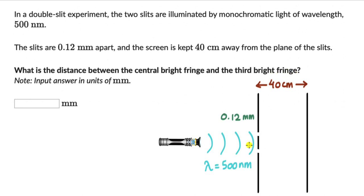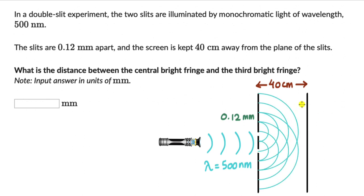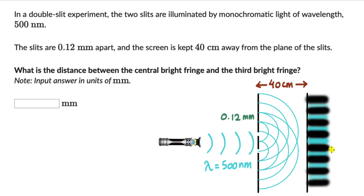We need to find the distance between the central bright fringe and the third bright fringe. When these light waves pass through the slits, they undergo diffraction and the diffracted waves from both slits interfere with each other, producing a pattern on the screen. Where waves interfere constructively you get a bright fringe, and where they interfere destructively you get a dark fringe.